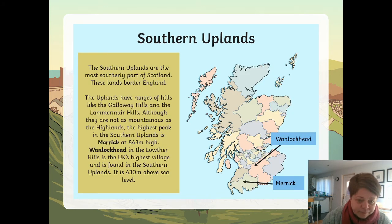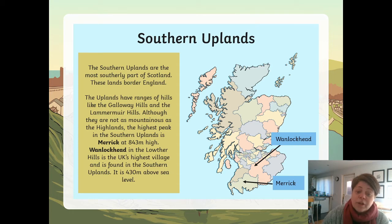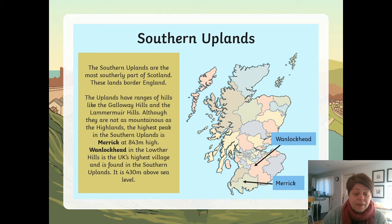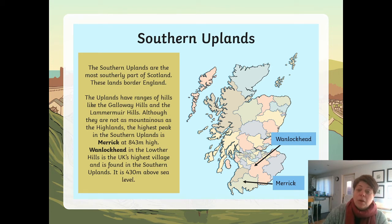The Southern Uplands are the most southerly part of Scotland and these lands border with England. The uplands have ranges of hills like the Galloway Hills and the Lammermuir Hills. Although they are not as mountainous as the Highlands, the highest peak in the Southern Uplands is Merrick at 843 metres high. Wanlockhead in the Lowther Hills is the UK's highest village and is found in the Southern Uplands at 430 metres above sea level.